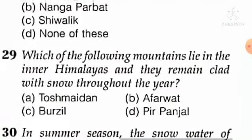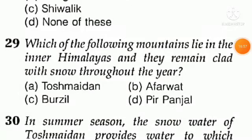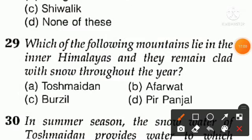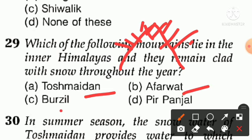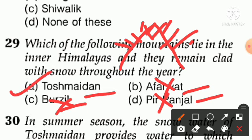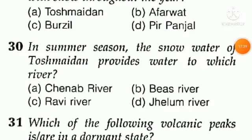Question number twenty-nine: which of the following mountains lie in the inner Himalayas and remain clad with snow throughout the year? It's not Aferwat, not Pir Panjal, not Burzil. Option A is right — Tosh Maidan. Tosh Maidan lies in the inner Himalayas and remains snow-covered throughout the year.